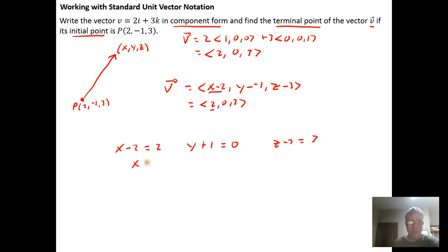So solving this for x, we get x equals 4, we get y equals negative 1, and we get z equals 6. So the terminal point was (4, -1, 6).